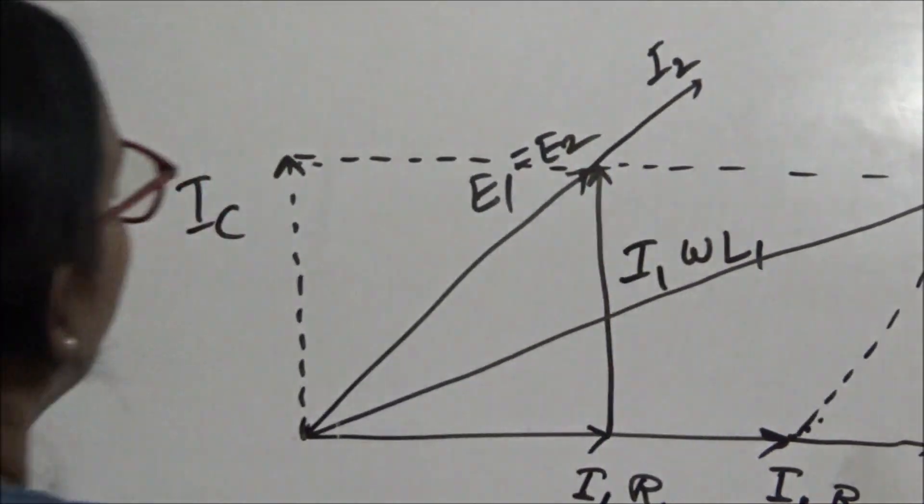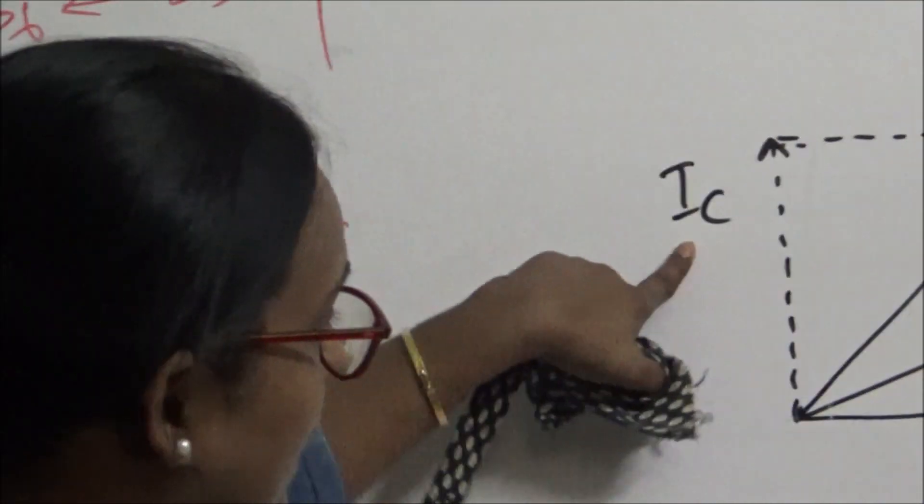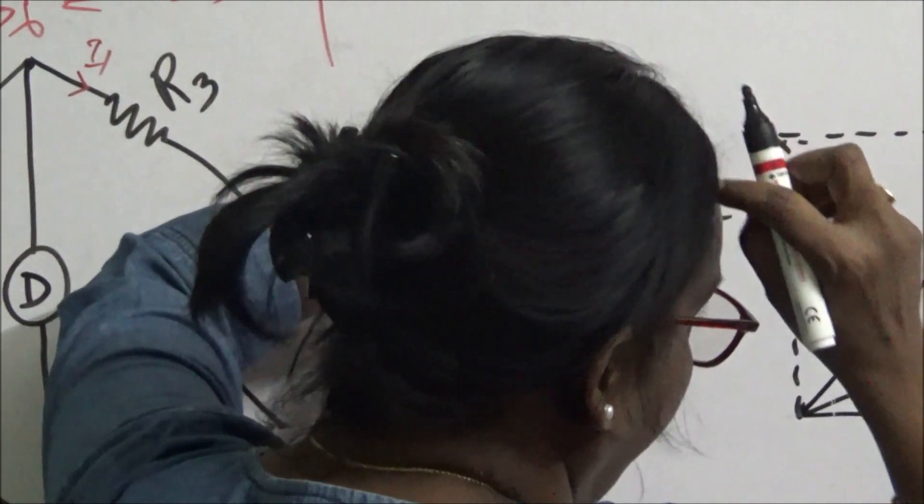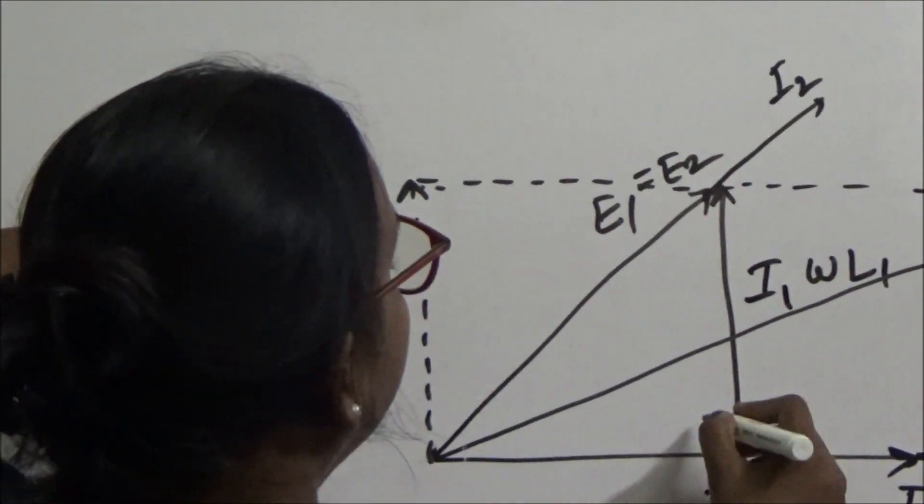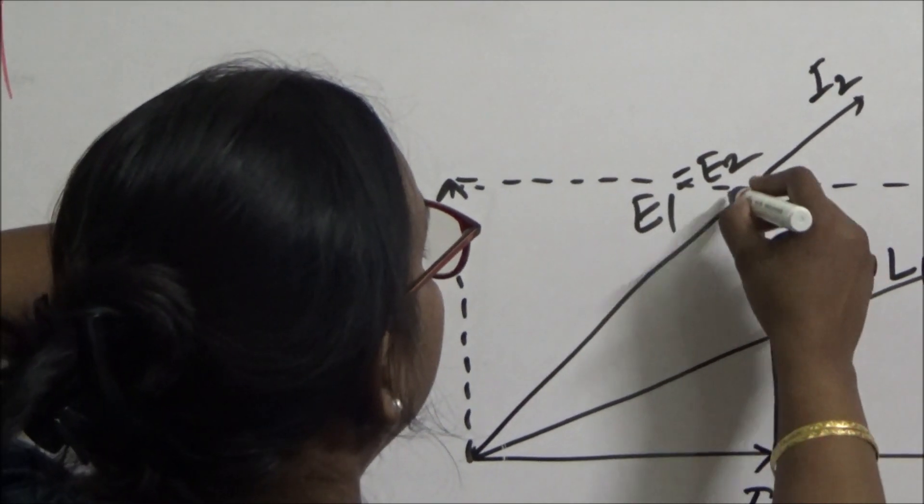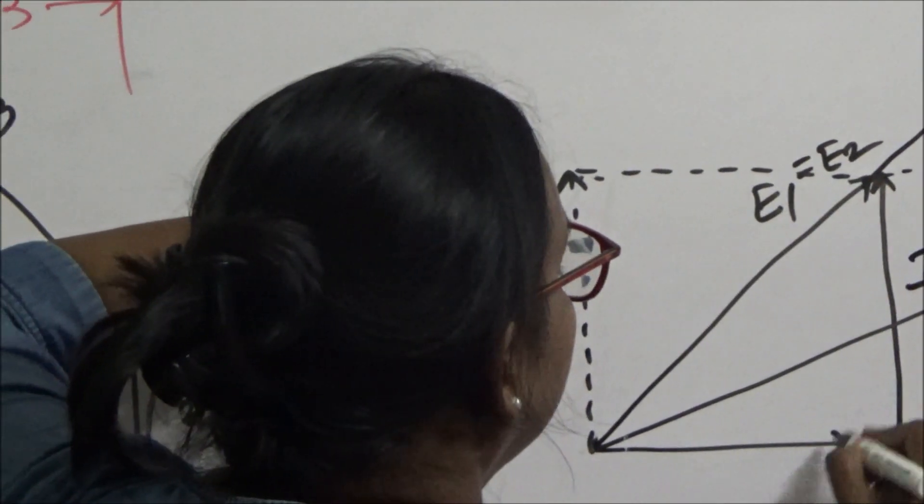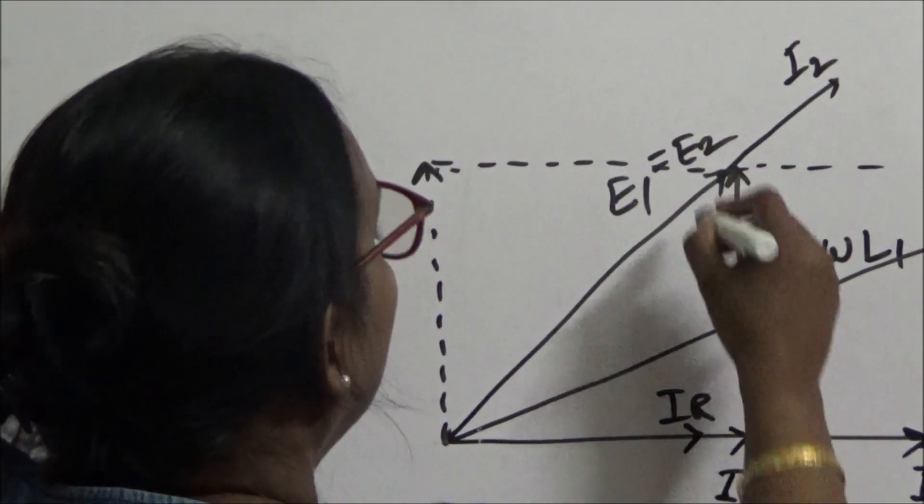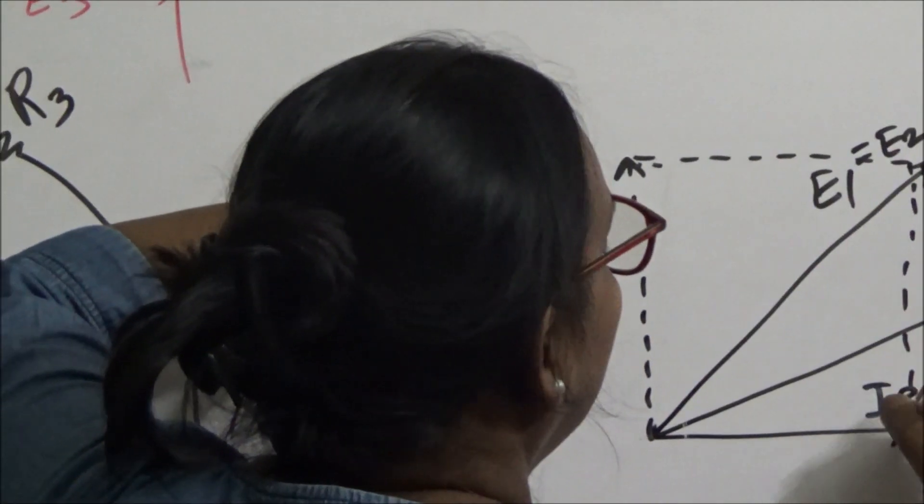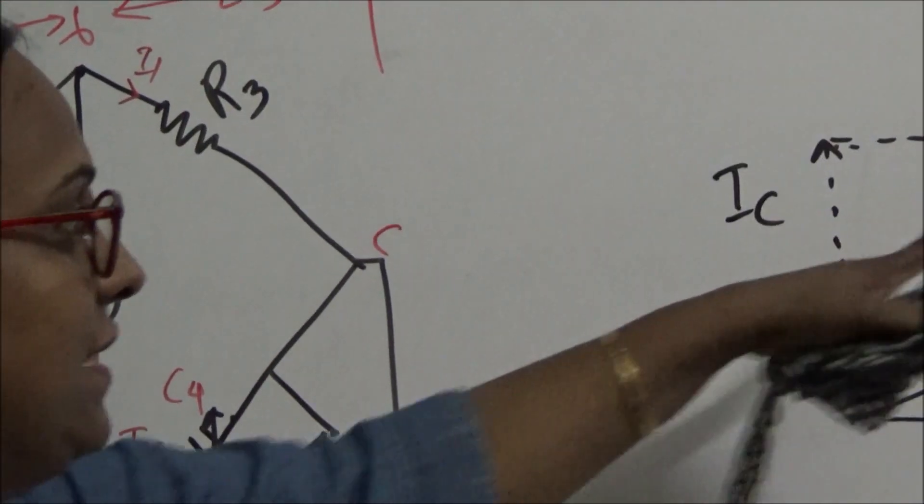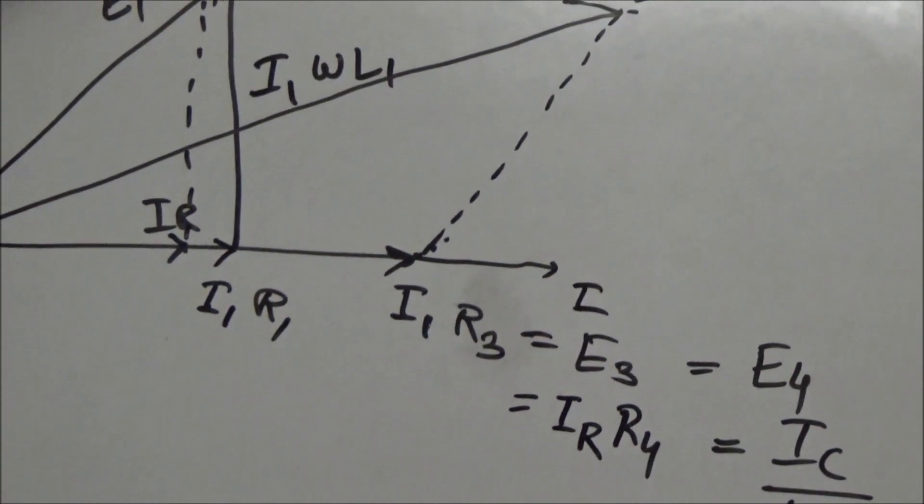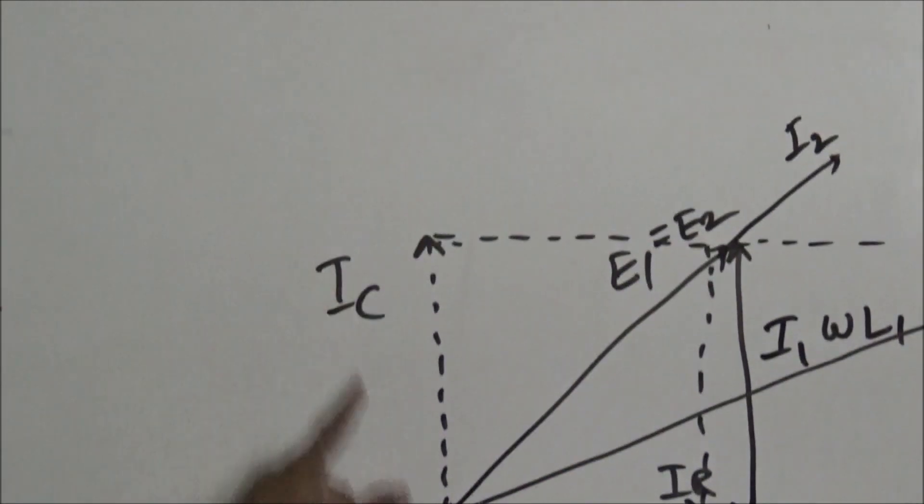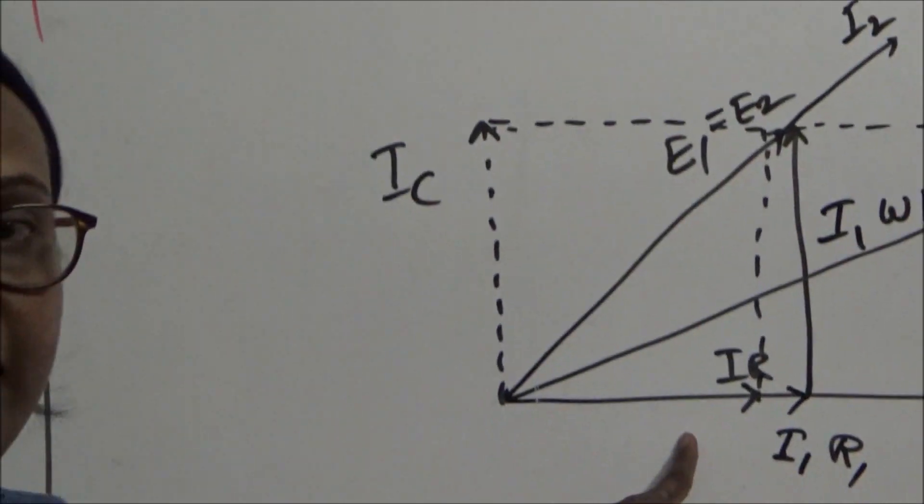I will join these two points. This is IC and this is my IR. So IR plus IC is equal to I2. I2 current is the phasor sum of IC plus IR.